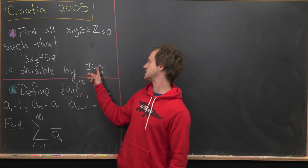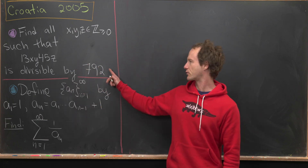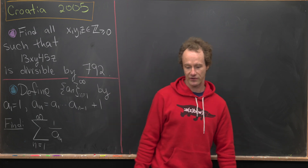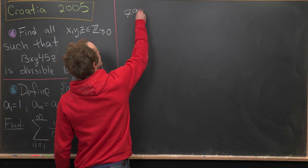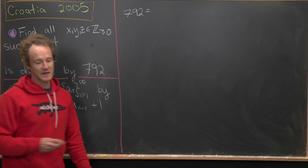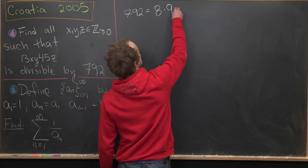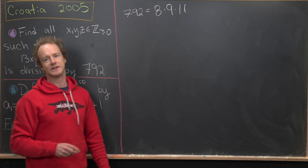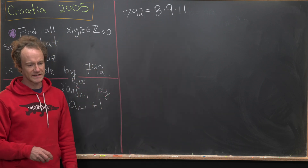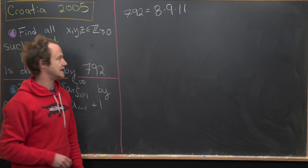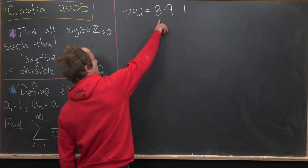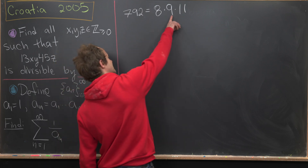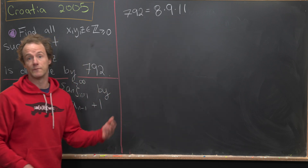Anytime you want to show one number is divisible by another, you need the prime factorization of the divisor. In this case, 792 equals 8 times 9 times 11 — factored into coprime integers. So we need to figure out x, y, z so that our number is divisible by 8, by 9, and by 11. There are nice divisibility rules for 9 and 11 which we'll review.